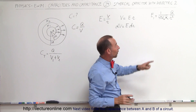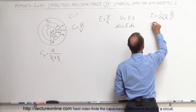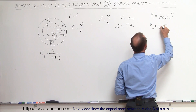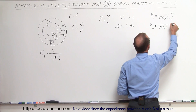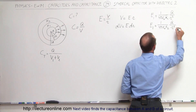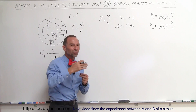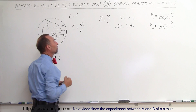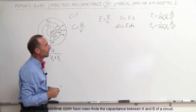For layer 2, all we have to do is change the dielectric: E2 is equal to 1 over 4πε₀k2 times q over r². Remember that in capacitors that are in series — and you can think of this as capacitors in series — the charge is the same for each.